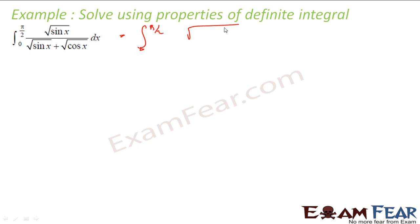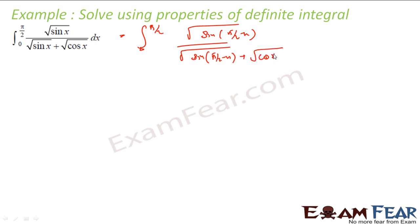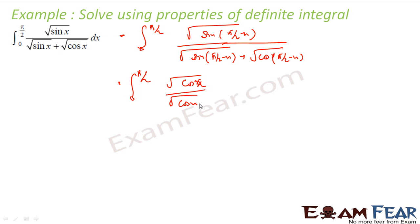We write the same way: √(sin(π/2 - x)) divided by √(sin(π/2 - x)) plus √(cos(π/2 - x)). This is nothing but the integral from 0 to π/2 of √(cos x) divided by (√(cos x) + √(sin x)). This is also I, and this is also I.